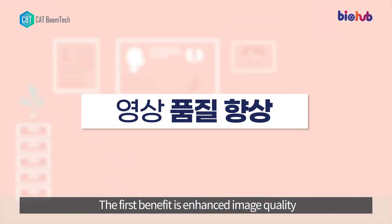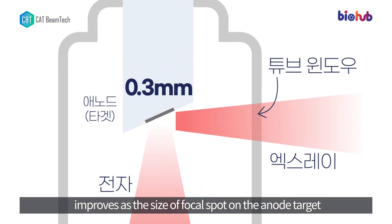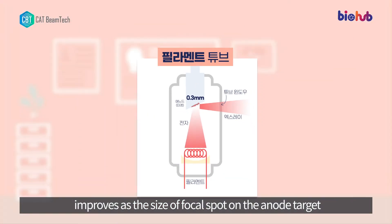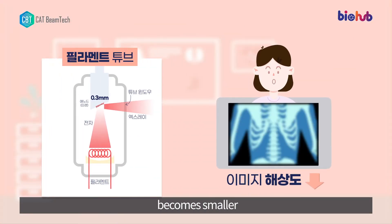The first benefit is enhanced image quality. The resolution of an X-ray image improves as the size of the focal spot on the anode target where the electrons collide becomes smaller.